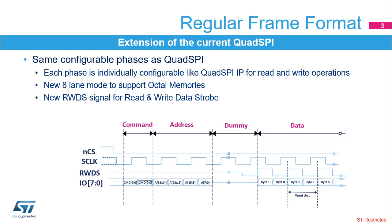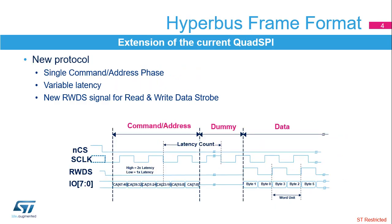The OctoSPI interface offers high flexibility for frame format configuration to address any serial flash from single data lane up to eight data lines. As with regular quad SPI, the user can enable or disable each of the phases, configure the length of each phase, and configure the number of lines used for each phase from one to eight. A new signal RWDS acts as either a write strobe during write operations or a read qualifier during read operations. The OctoSPI supports the new hyperbus mode, which combines the command and the addresses in a single initial phase. Hyperbus mode also uses a read qualifier and a write strobe during the data operation. The OctoSPI supports variable or fixed external memory latency, as defined by the hyperbus protocol specification.